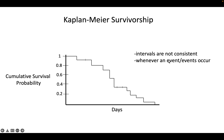This is a Kaplan-Meier survivorship curve. Typically, cumulative survival probability is plotted on the y-axis, going from 1 when everyone's alive, and as deaths — or whatever the event is — are occurring, the probability of survival is going down accordingly. You'll notice that the time intervals here aren't consistent, because whenever an event occurs, that's when these dips are happening.